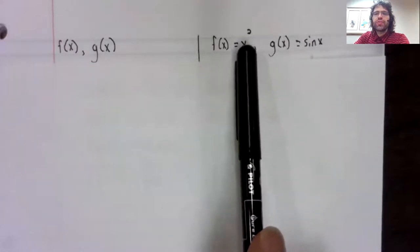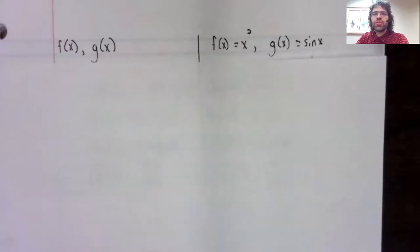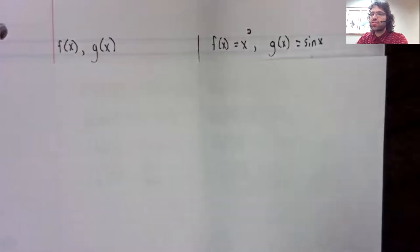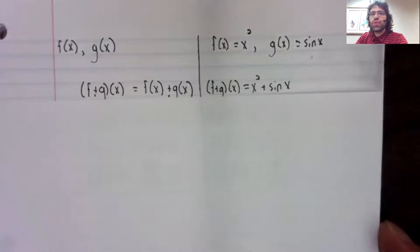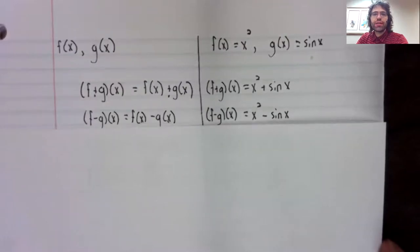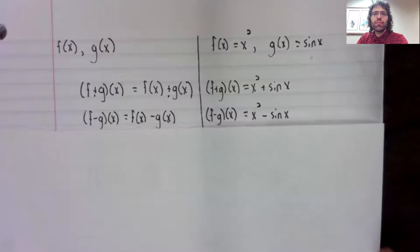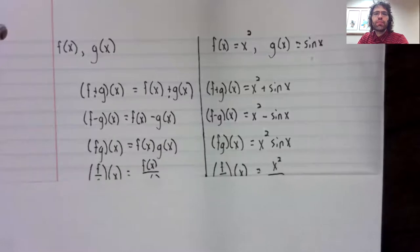Over here, I'll do examples with two specific functions, x squared and sine x. If we have two functions, we can add them, x squared plus sine x, subtract them, multiply them, and divide them.